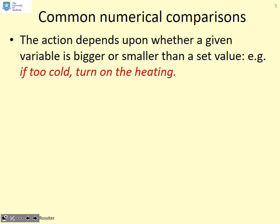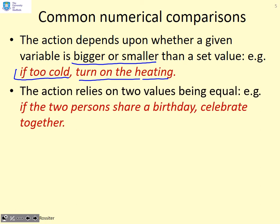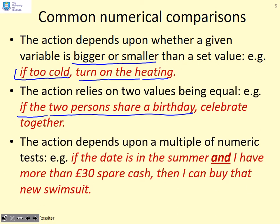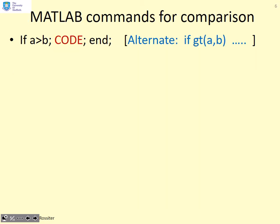Here we're going to focus on the if statement, where the action depends upon whether a given variable is bigger or smaller than a set value. For example: if it is too cold, turn on the heating. Here's another: if two persons share a birthday, celebrate together — the action depends on a comparison of the two people. Another example: if the date is in summer and I have more than 30 pounds spare cash, then I can buy a new swimsuit — the action depends upon the truth of two statements.